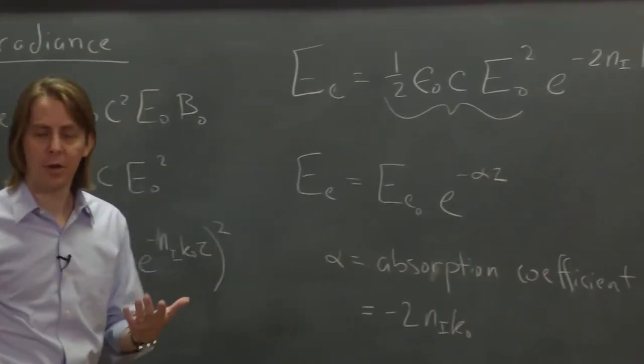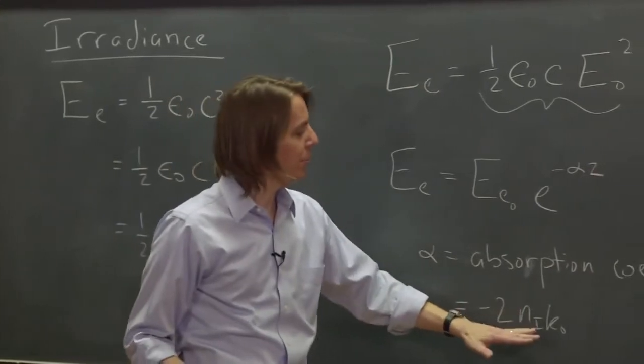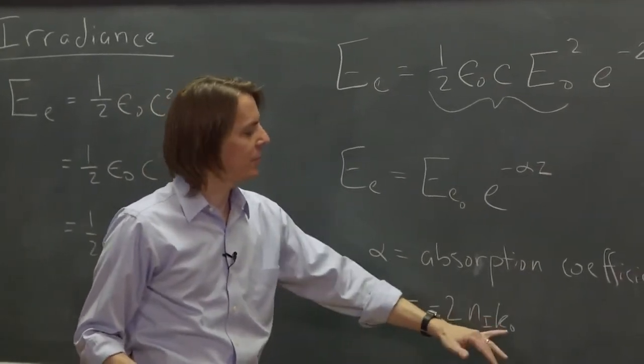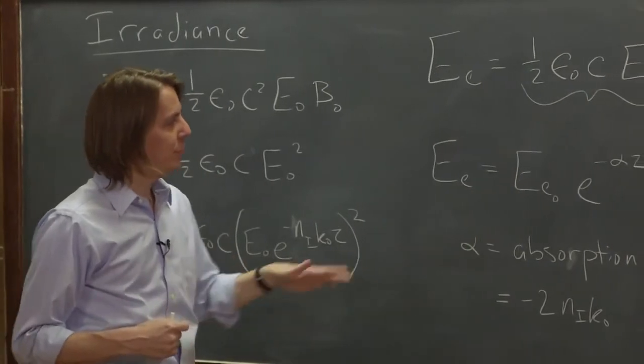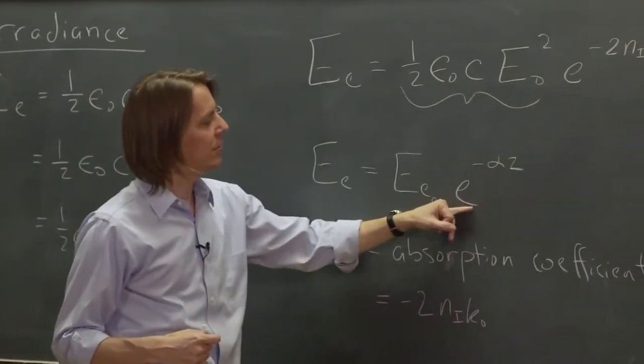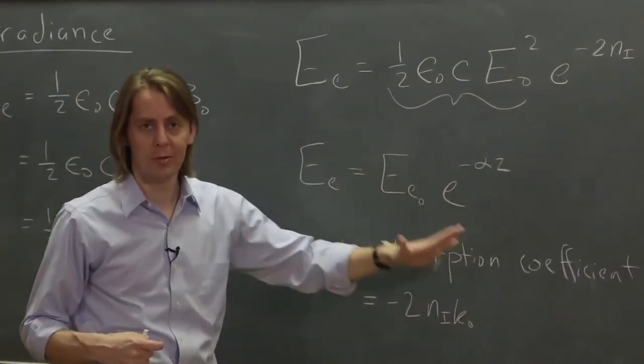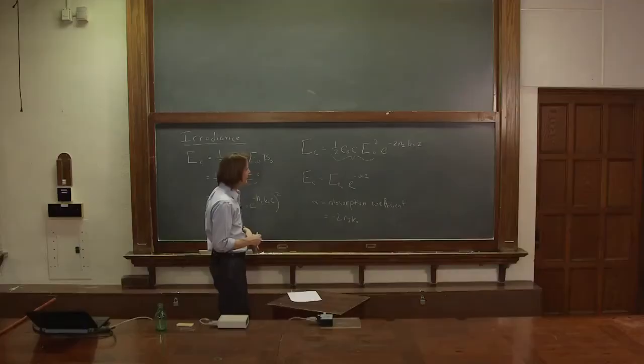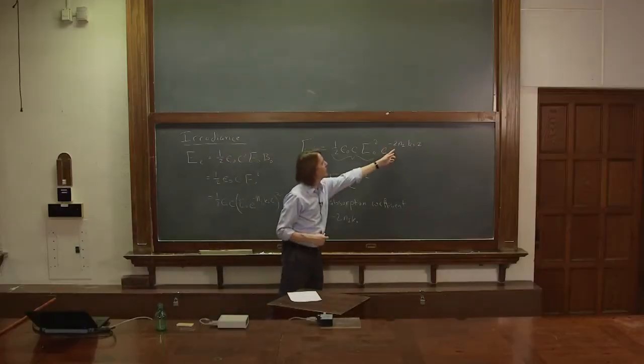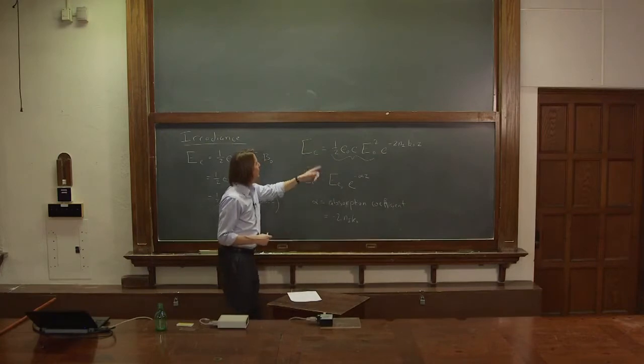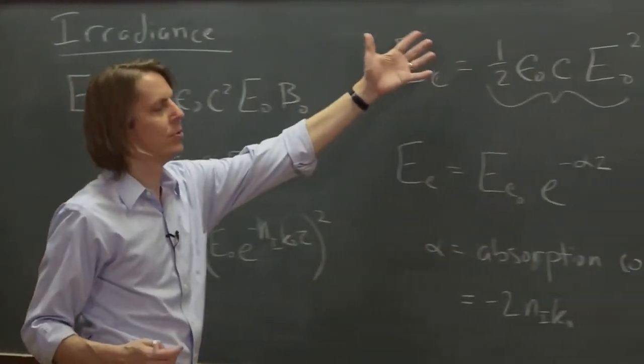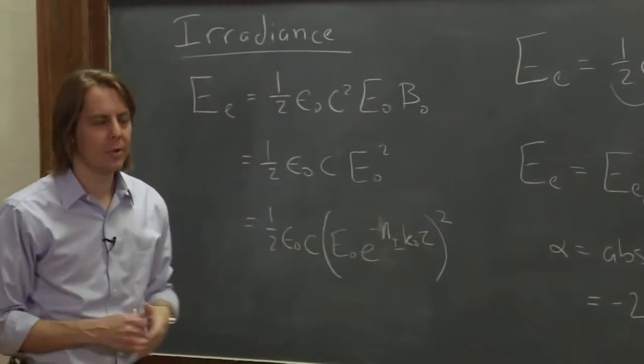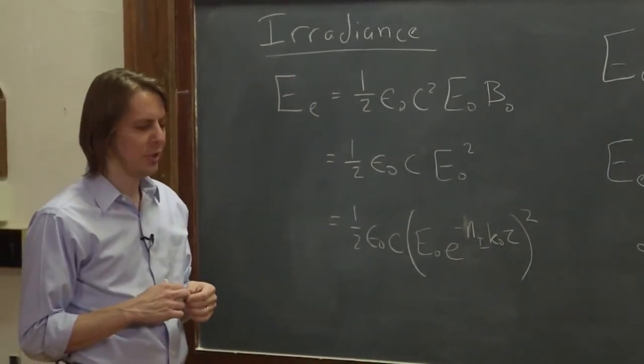And you can see it's equal to minus 2 n_i, k-naught. So if you have a dielectric medium, and you know the imaginary part of its refractive index at some wavelength, then you can calculate its exact absorption coefficient, which will tell you how quickly the amplitude, or the irradiance, will go down as you go through the material. And there's really just a factor of 2 difference between how the power goes down and how the field goes down, and the factor of 2 is just because the power, the irradiance, is the field squared.